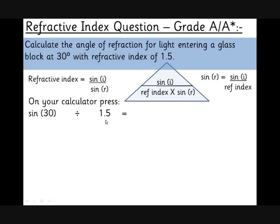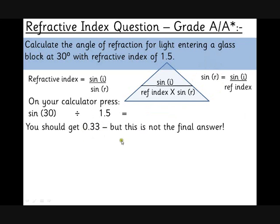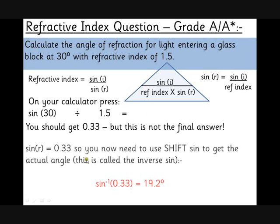So you do sine 30, that's the angle of incidence, divided by 1.5, that's the refractive index. It gives you 0.33, but be careful because that's not the angle that we're looking for. That's the sine r that we've just worked out. So again, you need a little bit of practice perhaps on your calculator to make sure you can do sine minus 1.